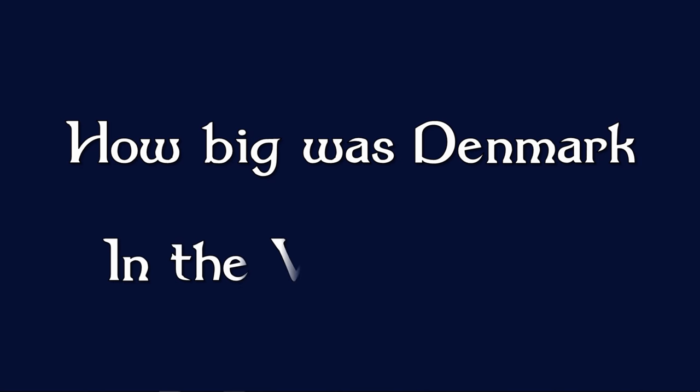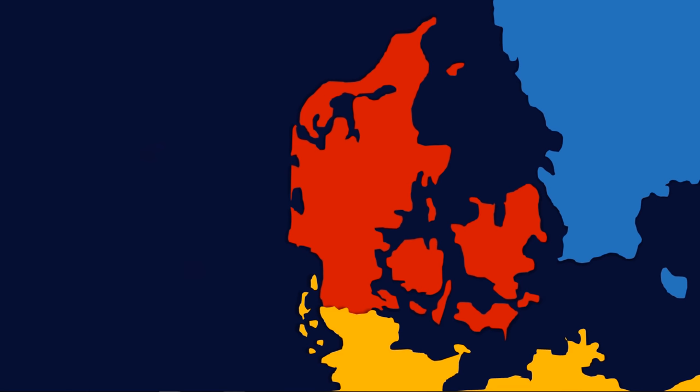How big was Denmark in the Viking Age? Denmark today can be divided into Jylland, Fyn, Sjælland and Lolland. Jylland is known in England as Jutland and is the large peninsula, with the three largest islands being Fyn, Sjælland and Lolland.